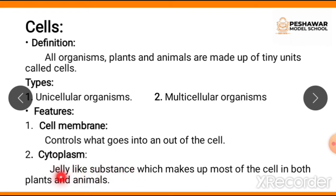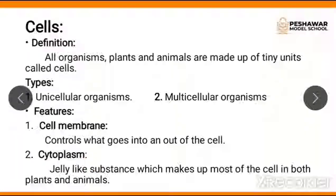Next is cytoplasm. Cytoplasm is a jelly-like substance which makes up most of the cell in both plants and animals. If anyone asks you 'what is a jelly-like substance called?' you have to answer: a jelly-like substance is known as cytoplasm. It is common in both plant cells as well as animal cells.